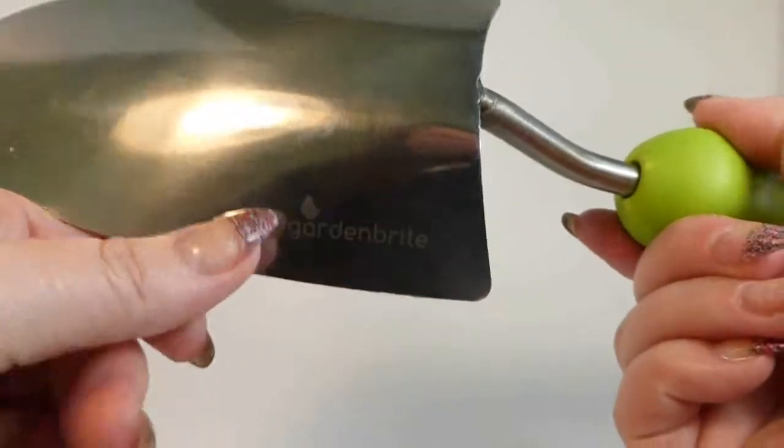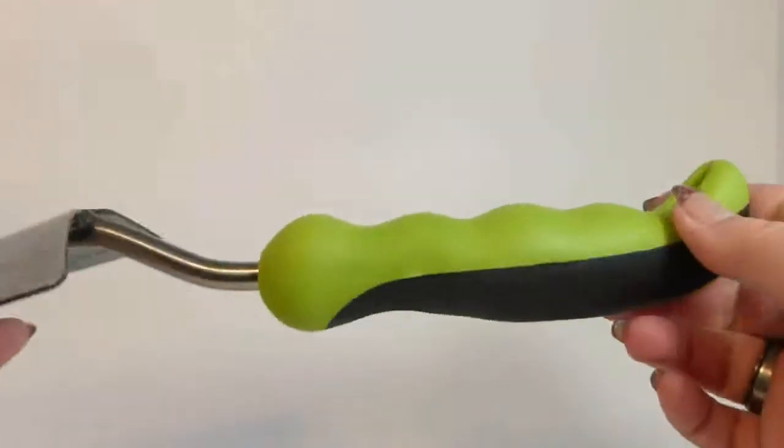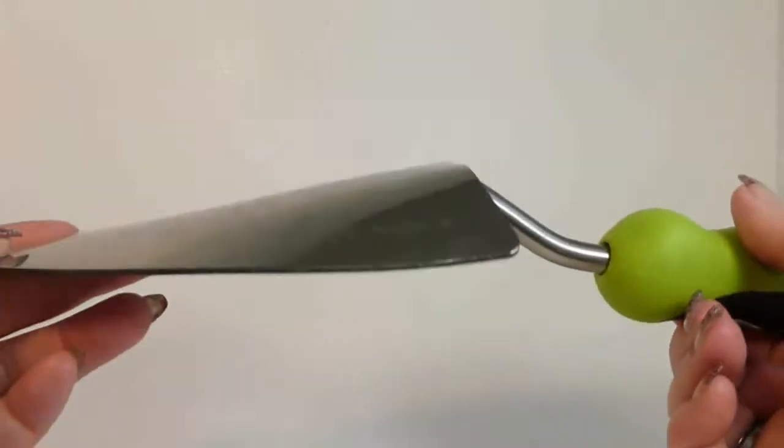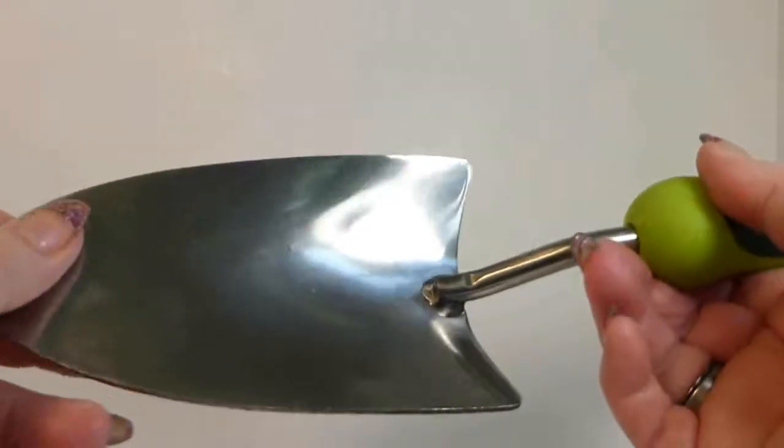It has the Garden Brite name on the back. I like the green handle. Green is my favorite color. It's stainless steel. Of course, it's rust resistant with proper care and cleaning.